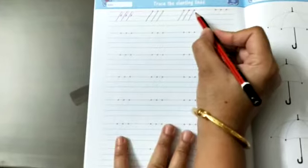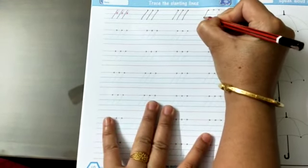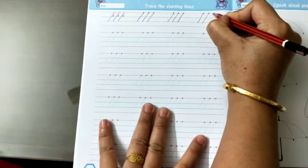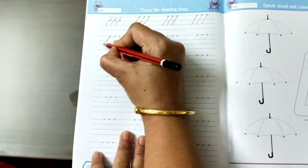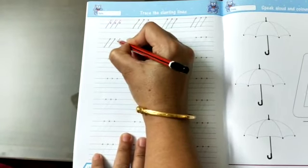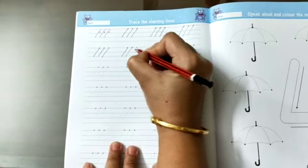Trace the slanting lines. These slanting lines are from right to left. Please keep on repeating, tell the child to keep on repeating it: right to left, right to left. Thank you. This is the work for today.